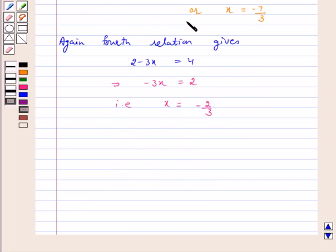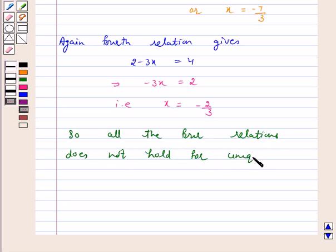From the first relation we get x is equal to minus 7 by 3 and from the fourth relation we get x is equal to minus 2 by 3. So, all the four relations do not hold for unique values of x. In other words, there is no value of x for which both the matrices are equal. Hence, our answer is B: not possible to find.